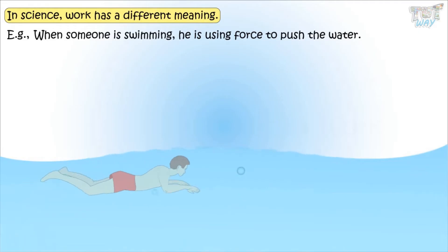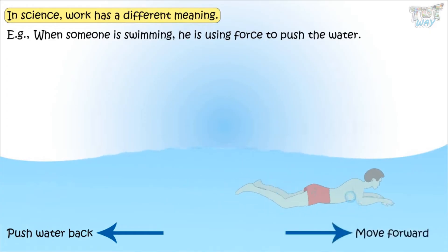His hands and feet push water back to make him move forward. Both pushing strokes and the water move in the backward direction. So the swimmer is working hard to swim.